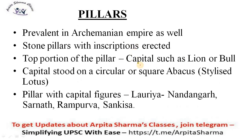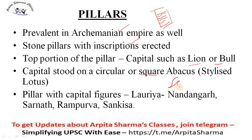One of the most prevalent structures during the Mauryan period were the pillars, prevalent in the Achaemenian Empire as well. Stone pillars with inscriptions were erected. Each pillar had a capital such as a lion or bull, and the capital stood on a circular or square abacus which was a stylized lotus in inverted form. The pillars with capital figures were found at Nauria, Nandangarh, Sarnath, Rampurva, and Sankisha. Do remember these locations as they can be directly asked in the question paper.